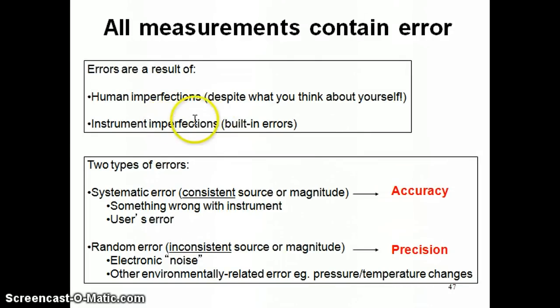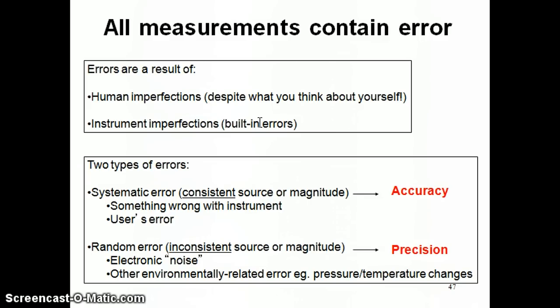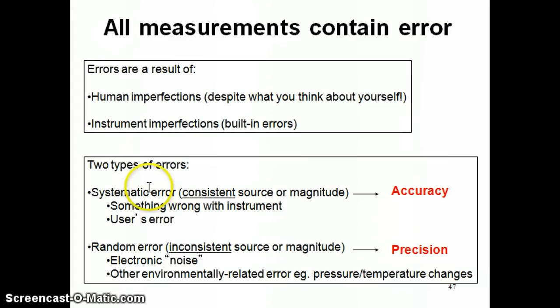The second type is just the imperfection of the instrument used to make that measurement — we can think of these as built-in errors. For example, in an electronic instrument like the balance, a lot of times you have electronic noise, which is the unreliability of having a connection that requires electricity to be transmitted from one side to another. There's a lot of what we call noise that can come in as a result of that transmission of electricity, so it's not perfect.